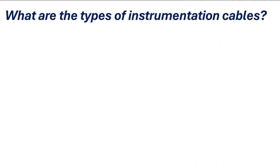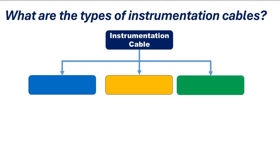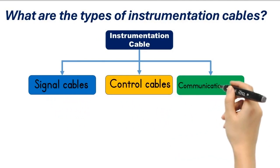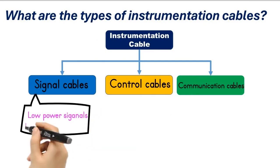What are the types of instrumentation cables? The instrumentation cables can be categorized into three categories: signal cables, control cables, and communication cables. Signal cables carry low power instrumentation signals like 4 to 20 milliampere signals between the instruments and the control system or monitoring devices.